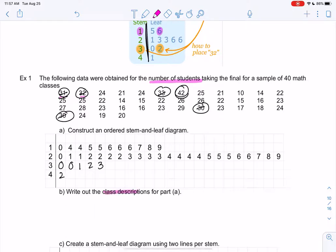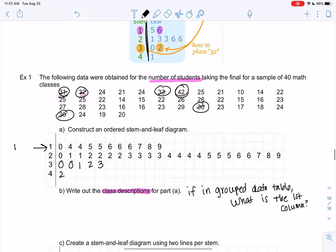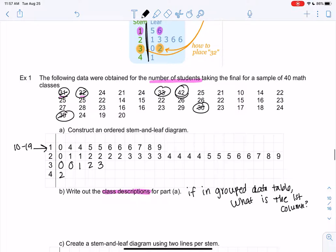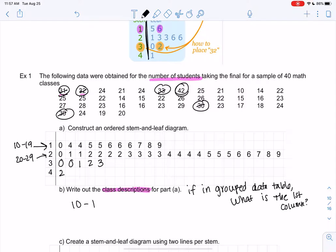So what are class descriptions? Class descriptions are what each row represents. So if I were to put this in a grouped data table, what would that first column be? The first row would be 10 through 19. That's a class description. The second row would be 20 through 29. And then the next one, even though we stop at 33, technically it goes up to 39, it just doesn't show up. These are all the same size. And then the last one, even though it only covers 42 in this data set, any number between 40 and 49 would go in that row.